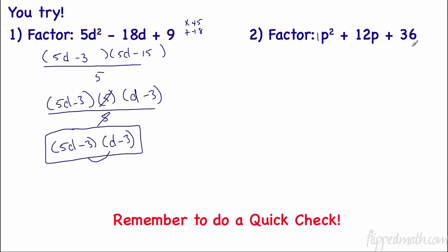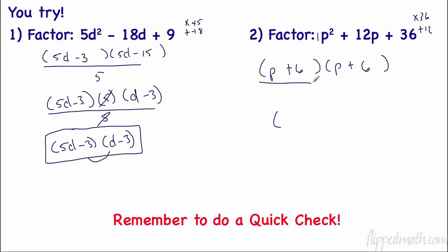For the second practice problem, a is 1 so we use the shortcut and skip dividing by 1. We need two numbers that multiply to 36 and add to 12 — that's 6 and 6. Starting with p in both places, we get (p + 6)(p + 6). Since both factors are the same, we can also write this as (p + 6) squared. Quick check: p times p is p squared, 6 times 6 is 36, and 6p plus 6p is 12p.